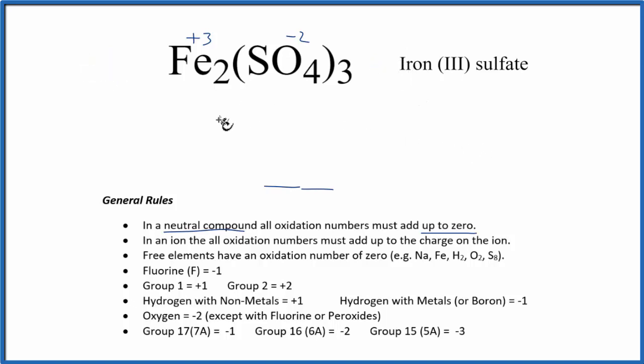You could also do this algebraically. Say we don't know what iron is - we'll call it X. We have 2 irons, plus this minus 2 for the sulfate, and we have 3 of those. That has to equal 0, so we'd have 2X plus 3 times minus 2 equals 0. That's 2X minus 6 equals 0, so 2X equals 6, and X equals 3 or plus 3. This matches what we got before.